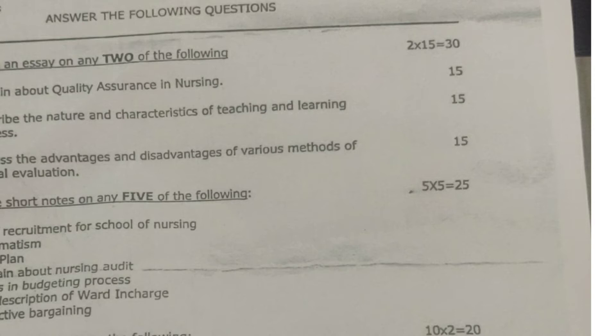Out of these 3 questions, you have to answer 2 questions — 2 into 15 equals 30 marks. Next, moving on to short notes of any 5 of the following. Here you will be given 7 questions; out of those 7 questions, you have to answer 5 questions. This is 5-mark questions, so 5 into 5 equals 25 marks.